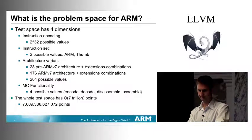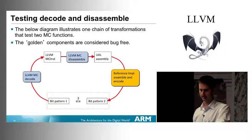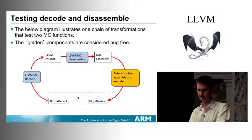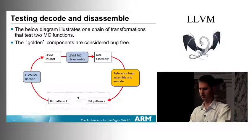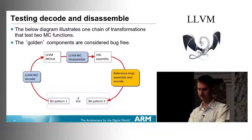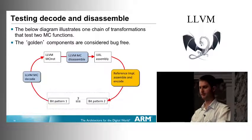Let's look at the theory behind testing these MC transformations. Starting with bit pattern 1 in the bottom left and going clockwise: you take a bit pattern, decode it into the internal representation, and disassemble it into an assembly string. UAL — Unified Assembler Language — is an ARM common assembly syntax between the two instruction sets. Once you have an assembly string, you use your golden reference implementation to assemble and encode it back into another bit pattern. The two bit patterns should be identical; if they aren't, there's a bug in MC.